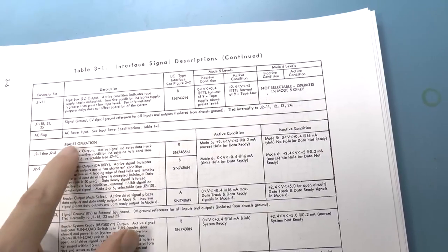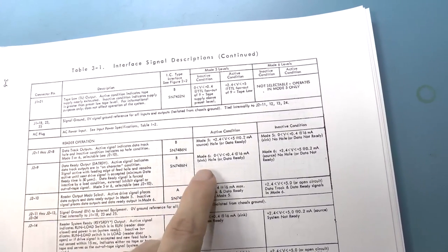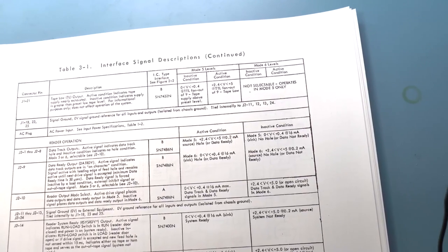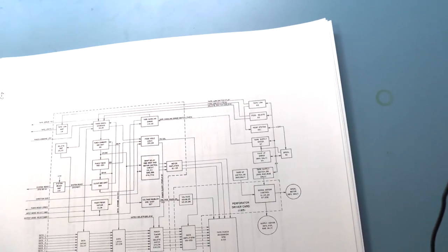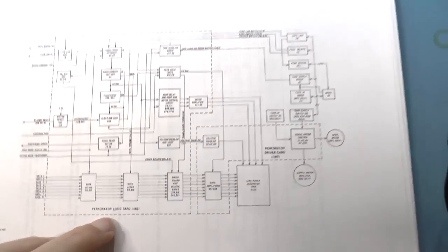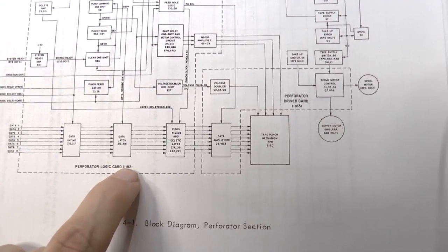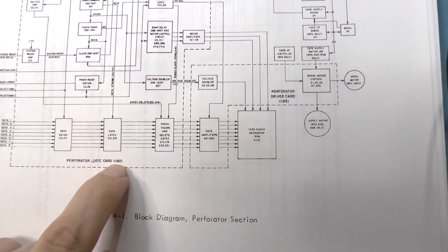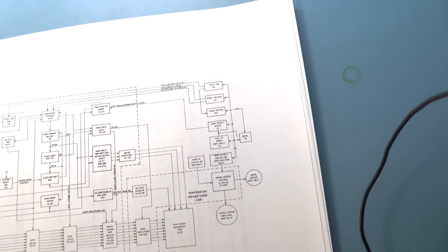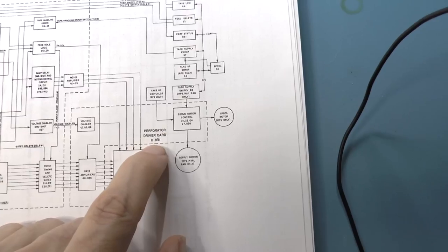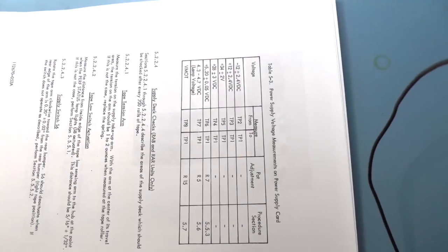And there is a similar one for the input. Here's the block diagram, and the interesting thing is it says right down here, perforator logic card 111821, which is exactly the number that I found on the logic card. So that works out perfectly. And this is 111831, which is this other card, which is the perforator driver card. So a perfect match.